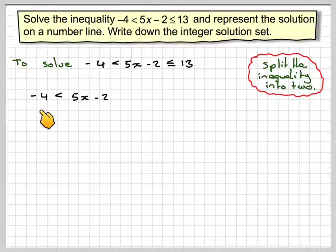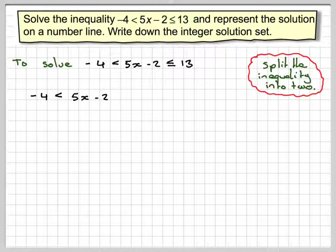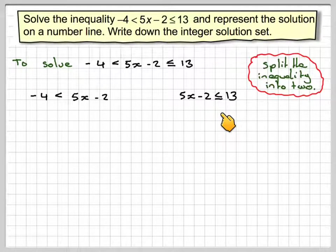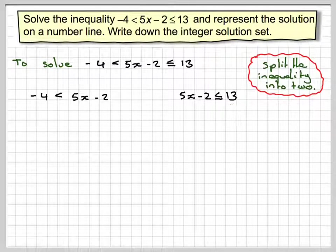So over here we will solve minus 4 is less than 5x minus 2. And here we will solve 5x minus 2 is less than or equal to 13.